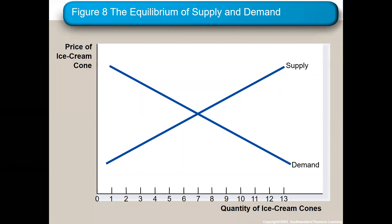If we change the price, quantity demanded would slide up or down the curve. A change in price or a shift in the supply curve will change quantity demanded — those are the two things that affect quantity demanded.